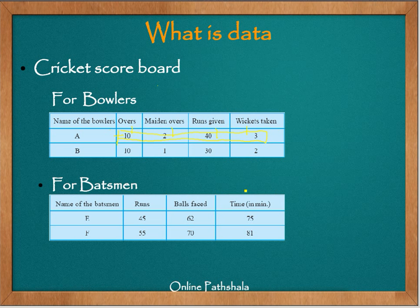So data is actually a collection of numbers where we try to get some information out of it. The same thing applies here with the batting. You can see there are some numbers — 45, 62, 75, 55, 70, 81 — which are actually trying to give some kind of information about batsmen E and F.